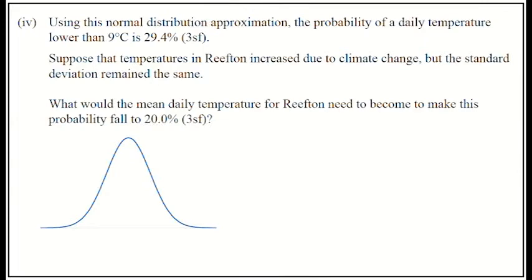What we're told is that under the normal distribution, the one that we've been using till now, the temperature, the chance of the temperature being lower than 9 degrees is 29.4 percent.